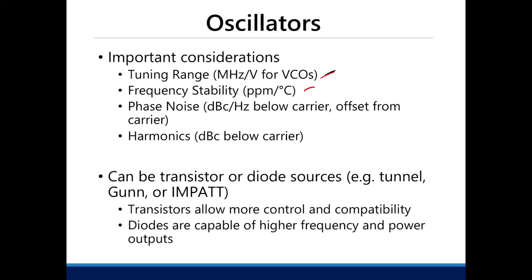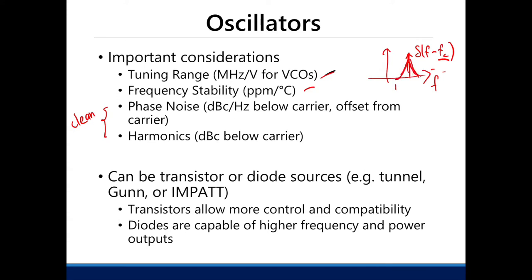Phase noise and harmonics quantify how clean the output spectrum of your oscillator is. Ideally, the frequency spectrum of an oscillator is an impulse function at the carrier frequency fc, or its frequency of oscillation. In reality, you can't make a perfect impulse function, so part of the frequency leaks out to its immediate vicinity — that is due to phase noise and the harmonics of your carrier.